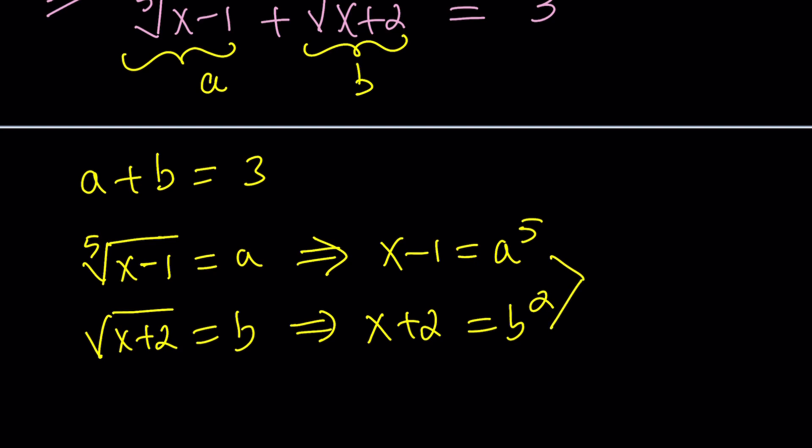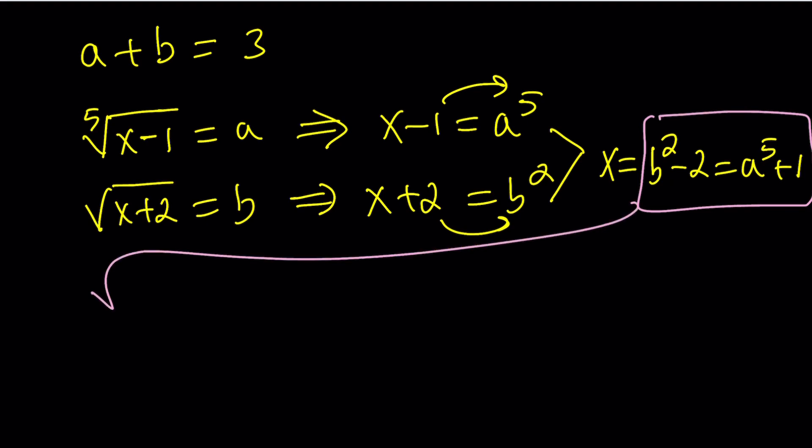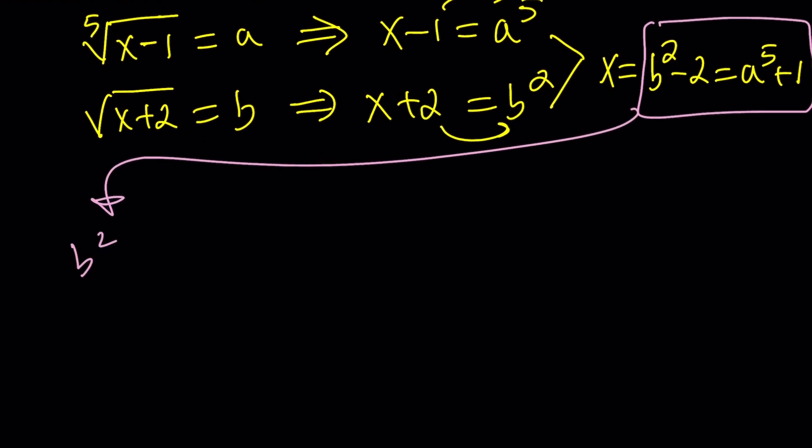Here's what we're going to do to put this together. From both of these equations, and you can do it in a different way, like you can subtract. But I'm going to isolate X from both of these equations. So that gives me, from the second equation, X equals B squared minus 2. But from this equation, it is equal to A to the fifth plus 1. So these two things are equal. That's really cool, by the way. And then from that, we get the following. I can isolate B squared. That becomes A to the fifth plus 3. Along with A plus B equals 3, we get a nice system, a super duper nice system, because it's very easy to solve.